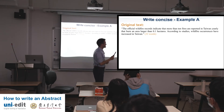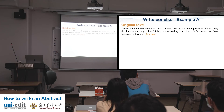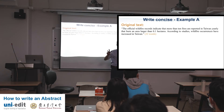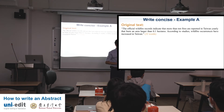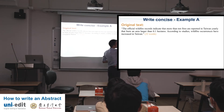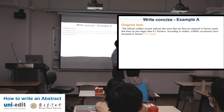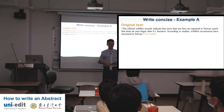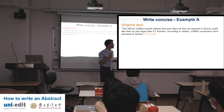Here we have two sentences: 'The official wildfire records indicate that more than 10 fires are reported in Taiwan yearly that burn an area larger than 0.1 hectares. According to studies, wildfire occurrences have increased in Taiwan.' Second sentence immediately — what can we delete? 'According to studies' — we can take it out. More difficult: 'official records' — you can also take that out, we know they're official. If the specific record is important, you can mention that in the introduction. So we've deleted 'according to studies' and 'the official wildfire records indicate.'